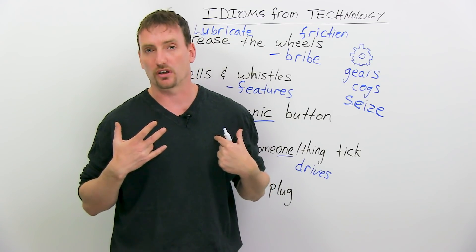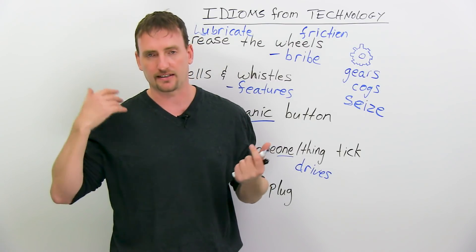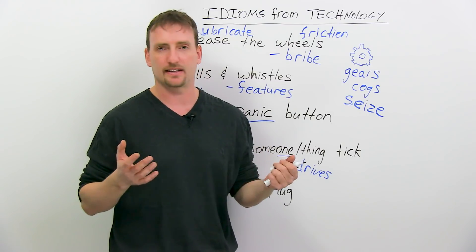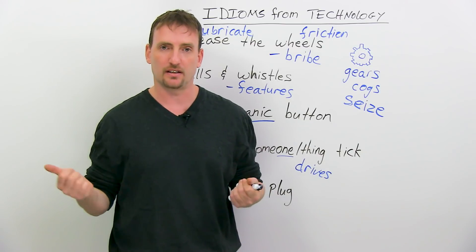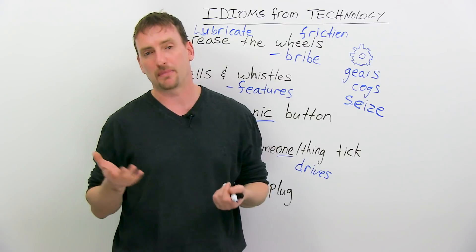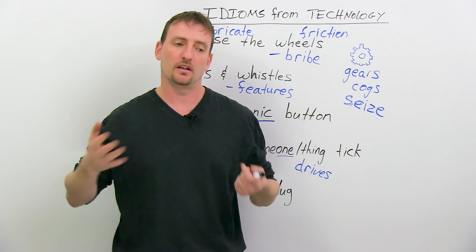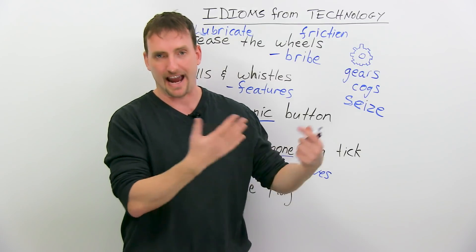For example, their lungs don't work, so there's a machine that basically gives them air and takes out their carbon dioxide. Without this machine, this person would die. So the family might decide to pull the plug, means disconnect the machine and let the person die, naturally.